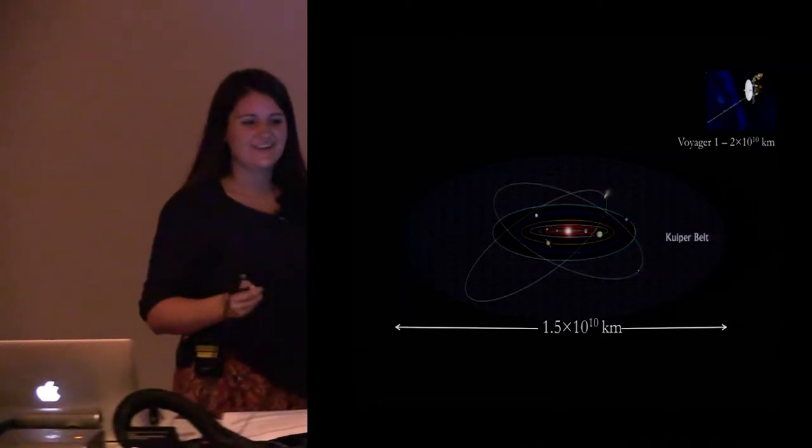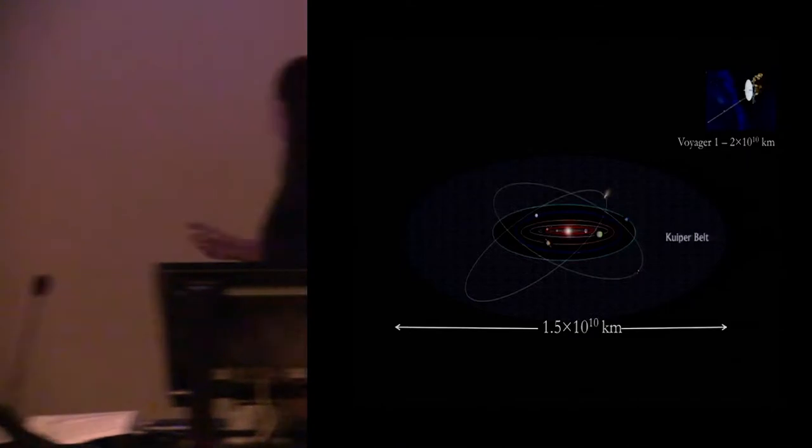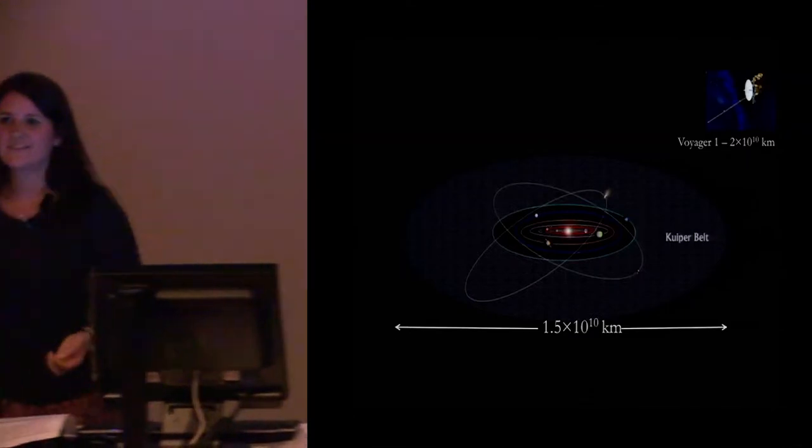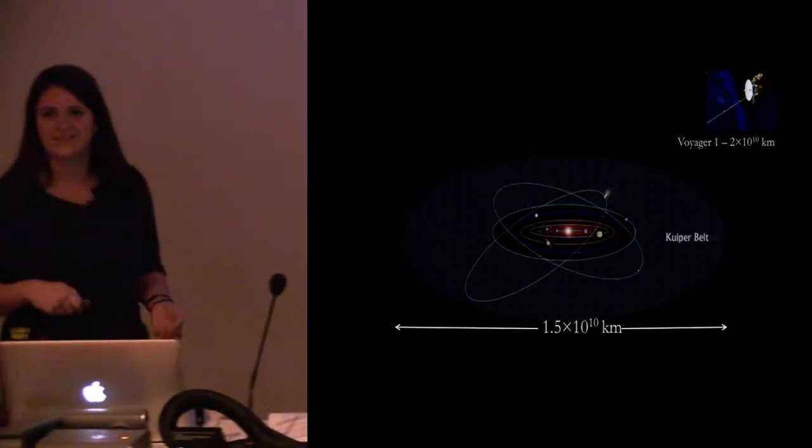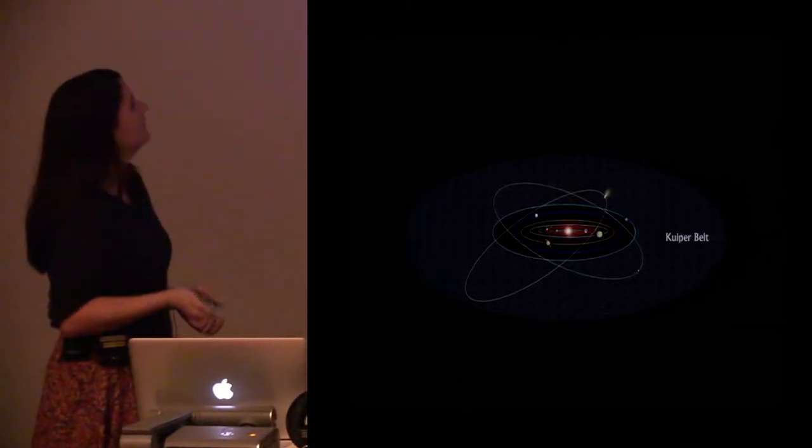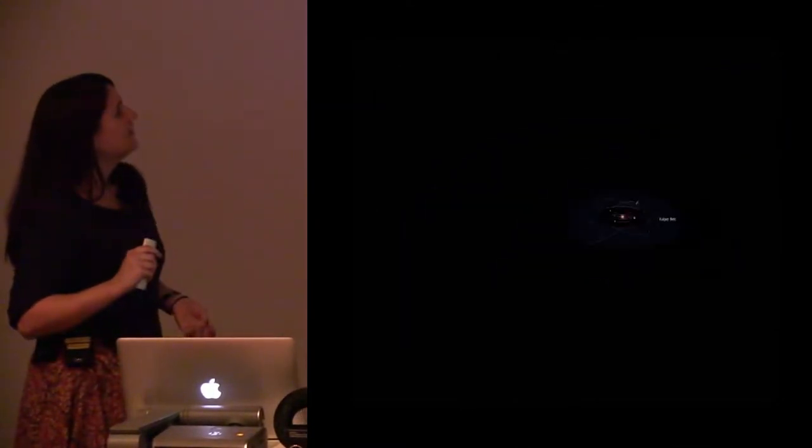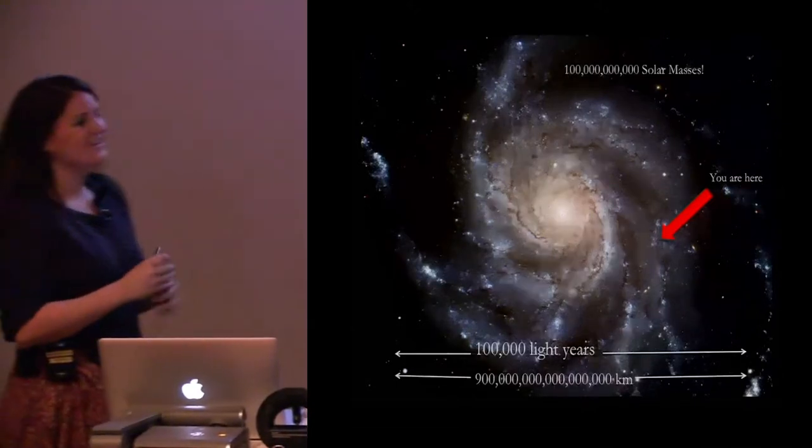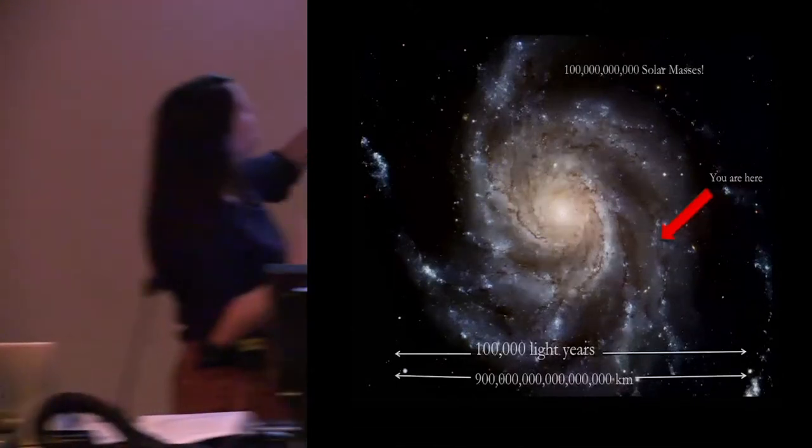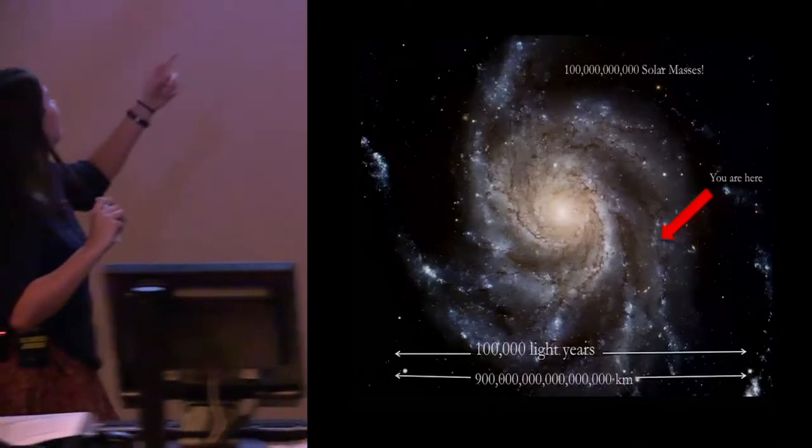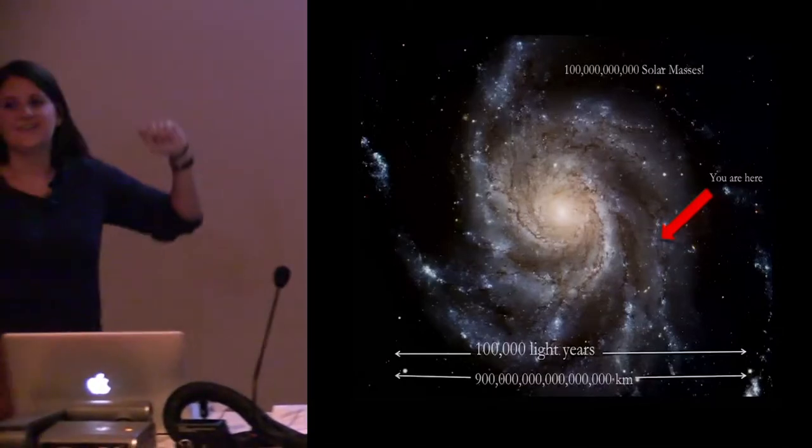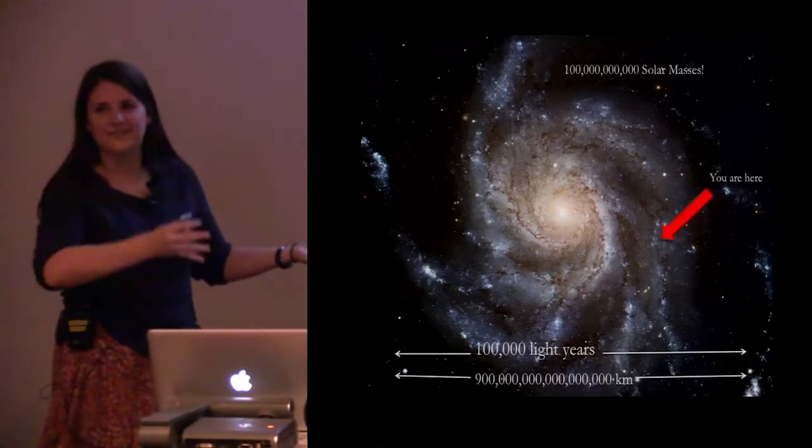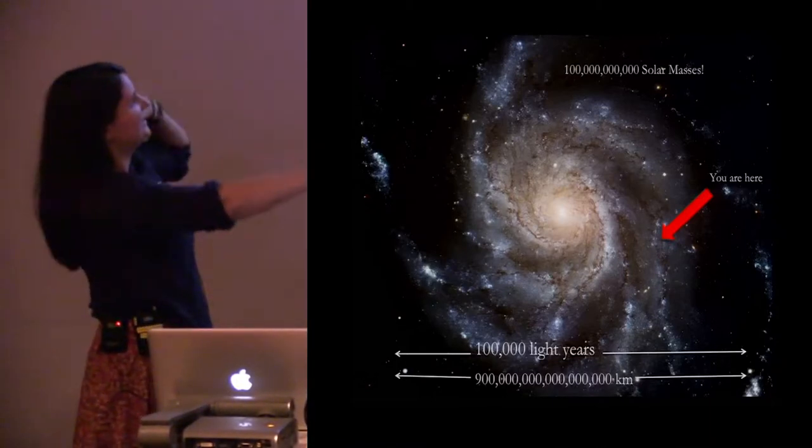So our sun is one of many stars in our galaxy. In fact there's a hundred billion other stars in our galaxy. So let's zoom out and have a look at our galaxy, or one that looks a lot like ours. So we are located on one of the spiral arms of our Milky Way galaxy which is a hundred thousand light years across. So what that means is it would take light a hundred thousand years to go from side to side of our galaxy.